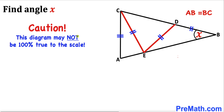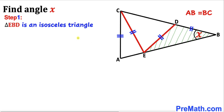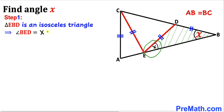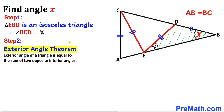Before we proceed, let me make it clear that this figure may not be 100% true to the scale. Let's get started with the solution. Let's focus on triangle EBD. We know that this is an isosceles triangle since this side length equals this one, so therefore if this angle is X, this angle has got to be X as well. So angle BED turns out to be X degrees. Let's recall the exterior angle theorem.